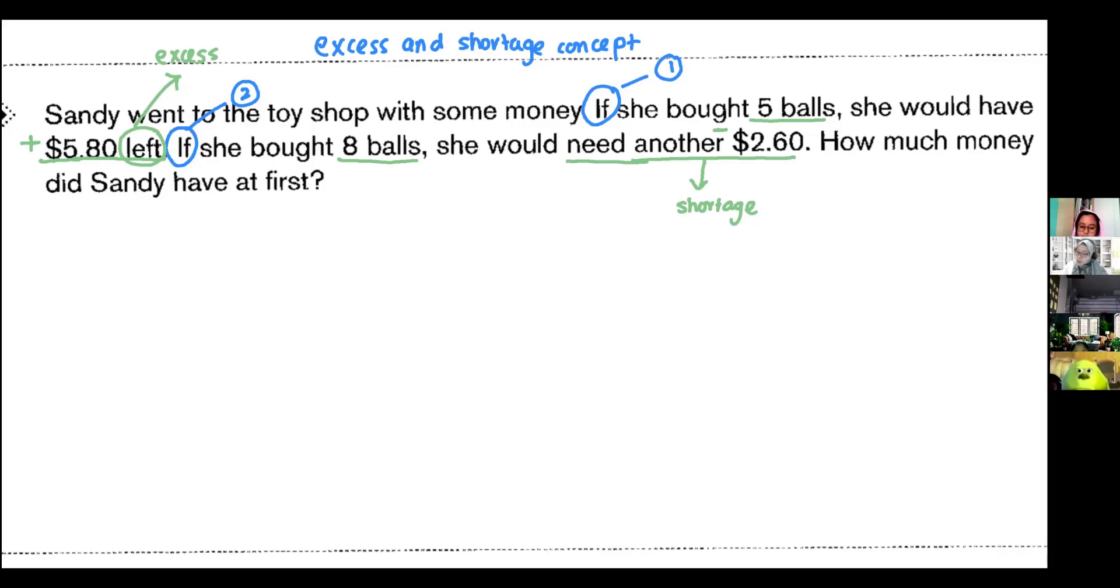Then I want to know how much money did she have at first. So we have all this information. Then what are we going to do? I am going to draw out the box, the excess and shortage box. So this is how it looks like.